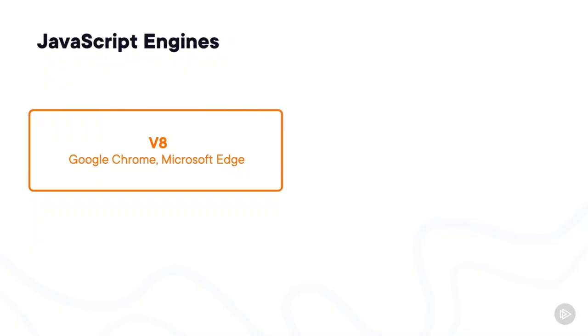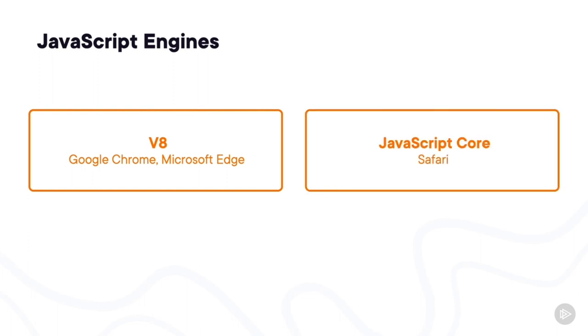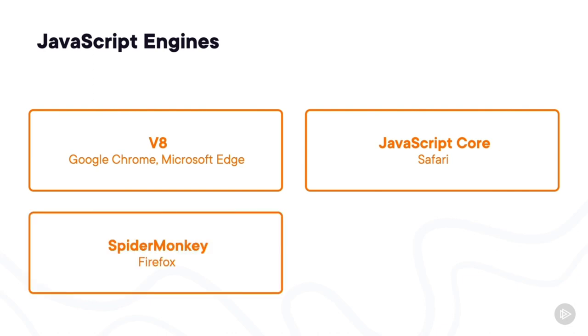Before we get to installing the prerequisites for this course, I need to discuss JavaScript versions, because this is a bit different than many other programming languages. When you run JavaScript, you are running it inside a JavaScript engine. Since JavaScript started in the browser, it's no surprise that each browser has its own JavaScript engine. V8 is the most popular, used by Google Chrome and Microsoft Edge. JavaScriptCore is the engine that runs on Safari, sometimes called Squirrelfish. And then we have SpiderMonkey, a descendant of the original JavaScript engine, used in Firefox.